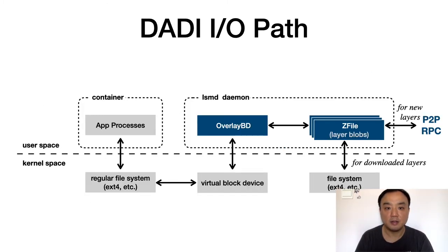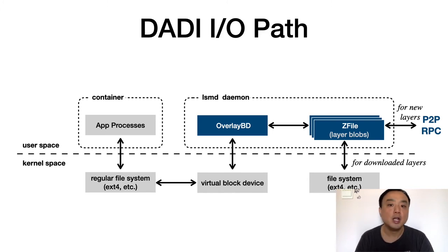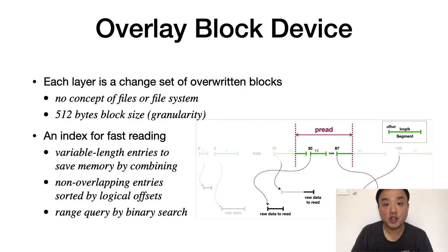The data path of DADI goes as follows. The application in container reads from a regular file system, like ext4. The request is then transformed into reads of a virtual block device. Then they get passed to a user space service daemon. Then get transformed by overlay bd to reads of one or more layer blocks. The reads usually need decompression by Z-files. For layers that do not exist locally, Z-files reads data with the help of the P2P subsystem.